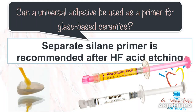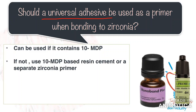Should a universal adhesive be used as a primer for glass-based ceramics? Many universal adhesives have silane incorporated within the solution itself, so is it possible to use universal adhesive instead of a separate silane primer? The answer is no. Based on research, it has been observed that the bond strength to glass ceramics is not as great when using universal adhesives alone, so it is better not to substitute universal adhesives for a separate silane primer. Another commonly asked question is whether a universal adhesive can be used as a primer when bonding to zirconia. Yes, it can be used as a zirconia primer if it contains 10-MDP. It is recommended to read the manufacturer's instructions, as not all universal adhesives contain 10-MDP. If it is absent, it is better to use a separate zirconia primer or a resin cement which contains 10-MDP.